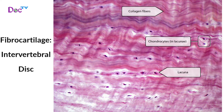Fibrocartilage, found in intervertebral discs, has thick collagen fibers in its matrix which is less firm than the hyaline cartilage matrix. It forms the intervertebral discs, pubic symphysis and knee joint discs, providing tensile strength and absorbing compressive shock.